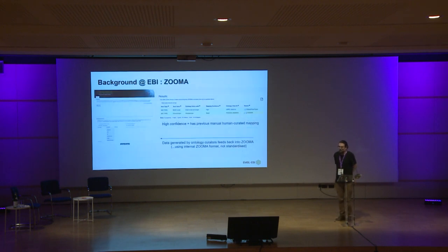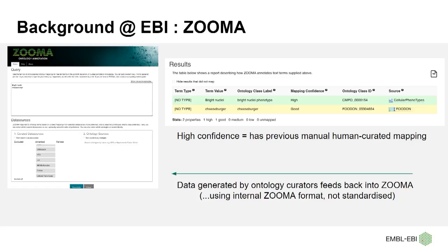At EBI we've got various tools to work with these string-to-term mappings; one of them is Zooma. Zooma allows you to give it a set of terms, tell it which ontology to look in and which projects to use as data sources, and it will come back with ideas for what those strings could map to. It gives varying confidence levels — high confidence means it's actually been an expert-curated mapping from a human curator, and lower confidence results come from things like lexical matching. The data generated by ontology curators feeds back into Zooma, so Zooma gets better over time.